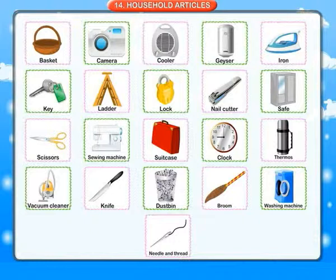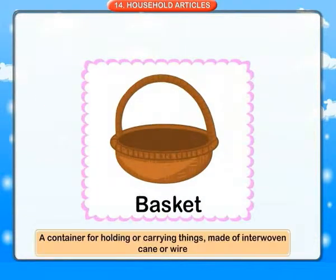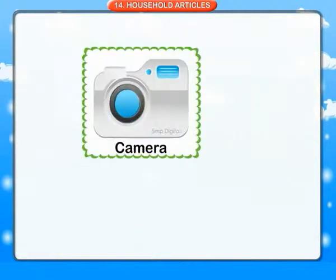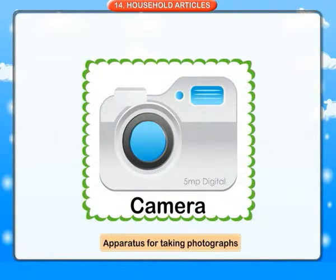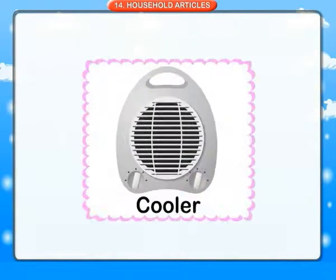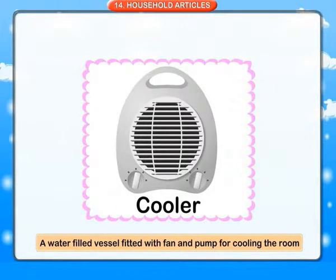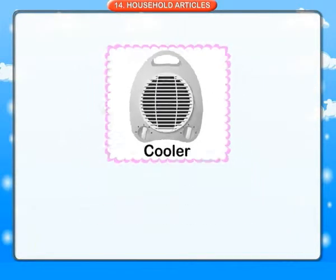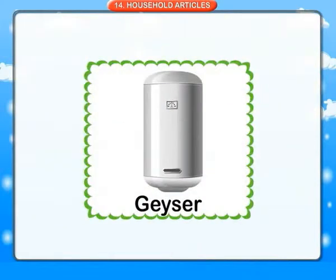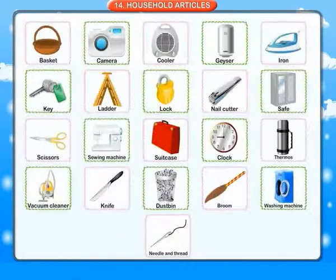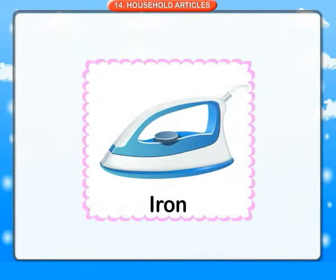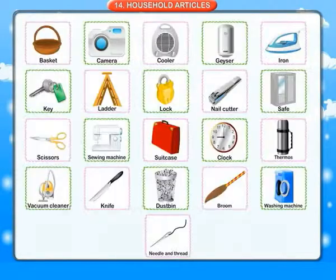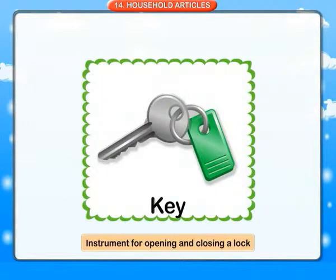Household articles. Basket: a container for holding or carrying things, made of interwoven cane or wire. Camera: an apparatus for taking photographs. Cooler: a vessel fitted with fan and pump for cooling the room. Geyser: a kind of water heater. Iron: a flat iron for smoothing clothes. Key: an instrument for opening and closing a lock.